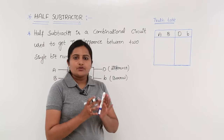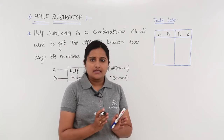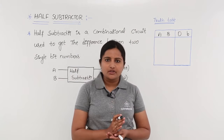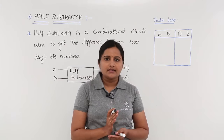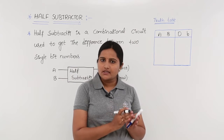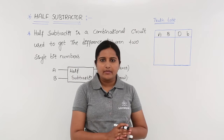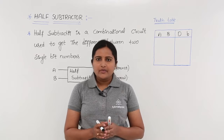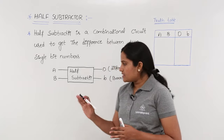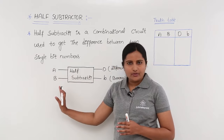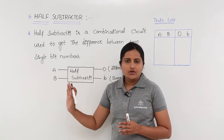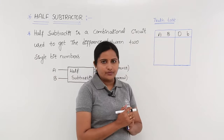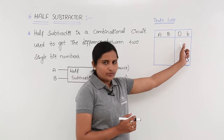To design this functionality as a logic circuit, we need to consider the truth table first, then the K-map, and after that use the expression from the K-map to derive the logic diagram. Since this half subtractor has two inputs, I am taking two inputs in the truth table as well — two inputs and two outputs.